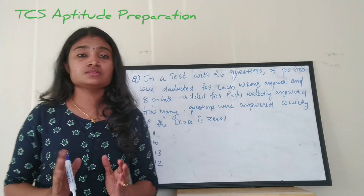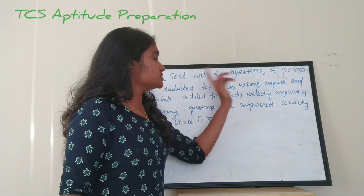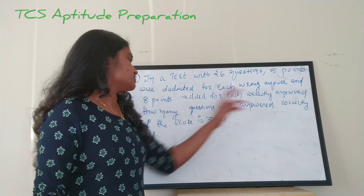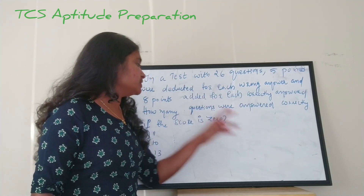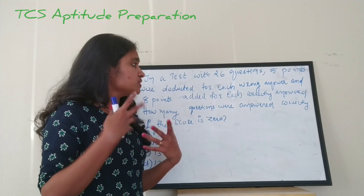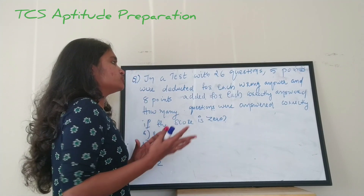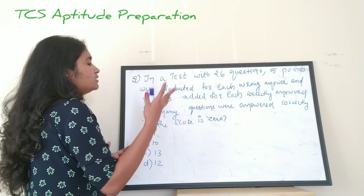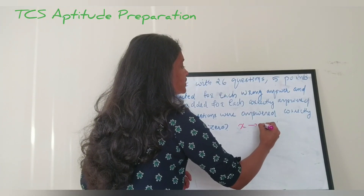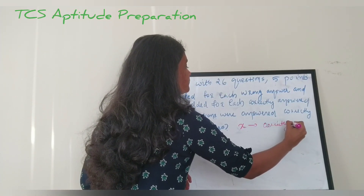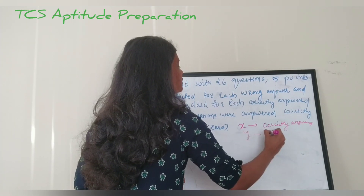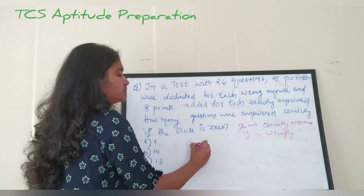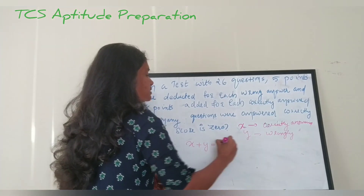Next question: In a test with 26 questions, five points are deducted for each wrong answer and eight points are added for each correctly answered question. How many questions were answered correctly if the score is zero? We are assuming all questions were answered. So let x be the number of correctly answered questions and y be the number of wrongly answered questions. We can write x plus y equals 26.